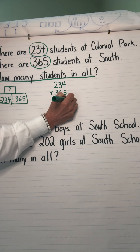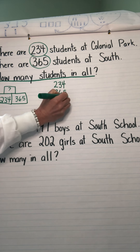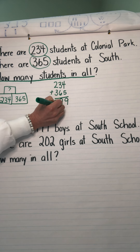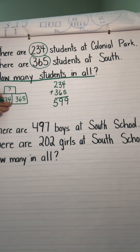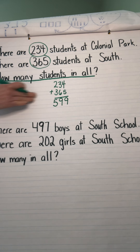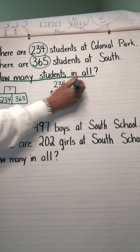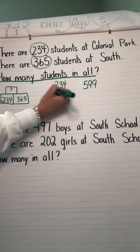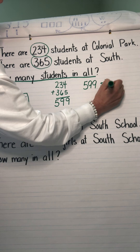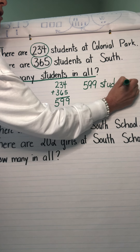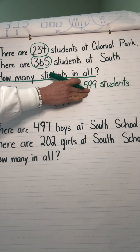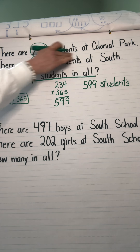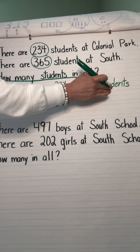I'm going to add my ones: 4 plus 5 is 9. I'm going to add my tens: 3 plus 6 is 9. And I'm going to add my hundreds: 2 plus 3 is 5. You can do all this work on a separate piece of paper. What you do need to do is write or type 599 students — 'students' is our unit. If it was Legos the unit would be Legos; if it was M&Ms the unit would be M&Ms.